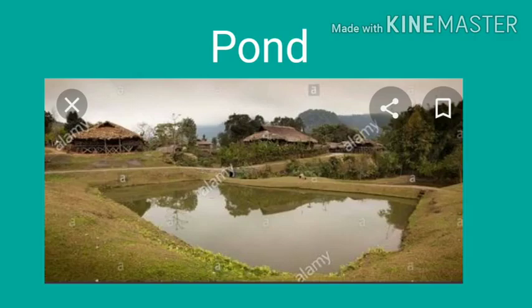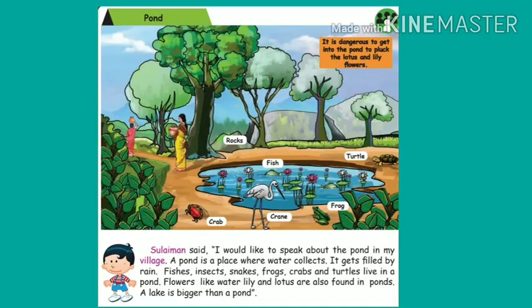On page 79, you can see 'pond.' A pond is a place where water collects. It gets filled by rain. Fishes, insects, snakes, frogs, and crabs and turtles live in a pond.